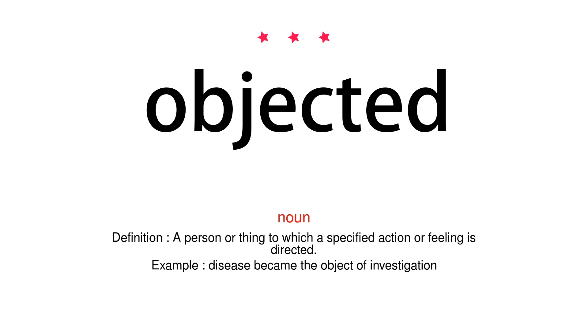Noun. Definition: a person or thing to which a specified action or feeling is directed. Example: disease became the object of investigation.